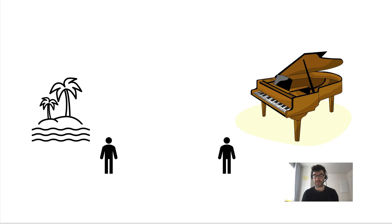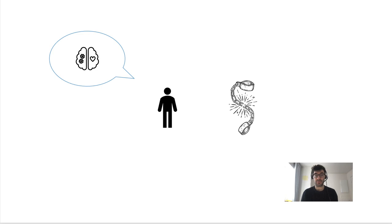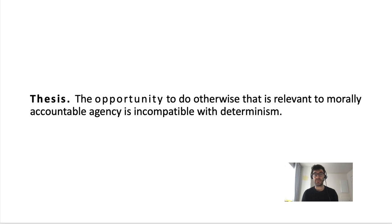Franklin argues that free will requires the ability to do otherwise — you do something freely only if you could also have not done it. And doing otherwise, according to Franklin, requires both the ability to do otherwise and the opportunity to do otherwise. So you need to have the normative competence to consider different reasons and then act on them, and you also need to have the opportunity to exert this ability. Franklin's key thesis is that the opportunity to do otherwise relevant for moral accountability and free will is incompatible with determinism — we lack free will if determinism is true because we never have the opportunity to do otherwise.